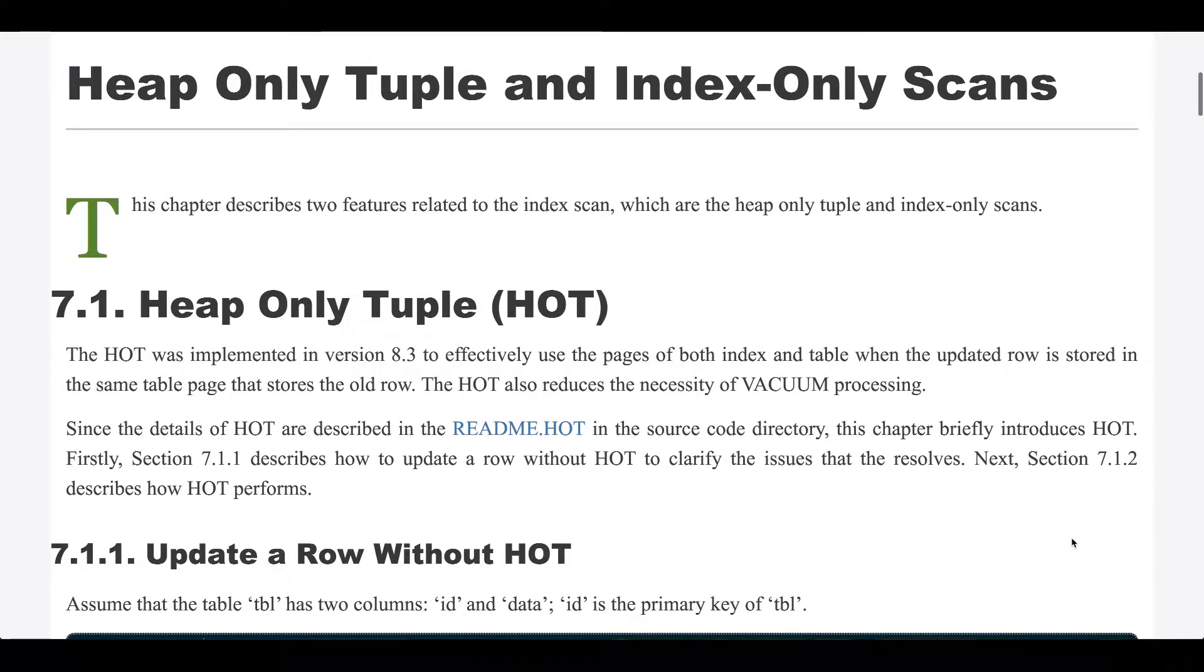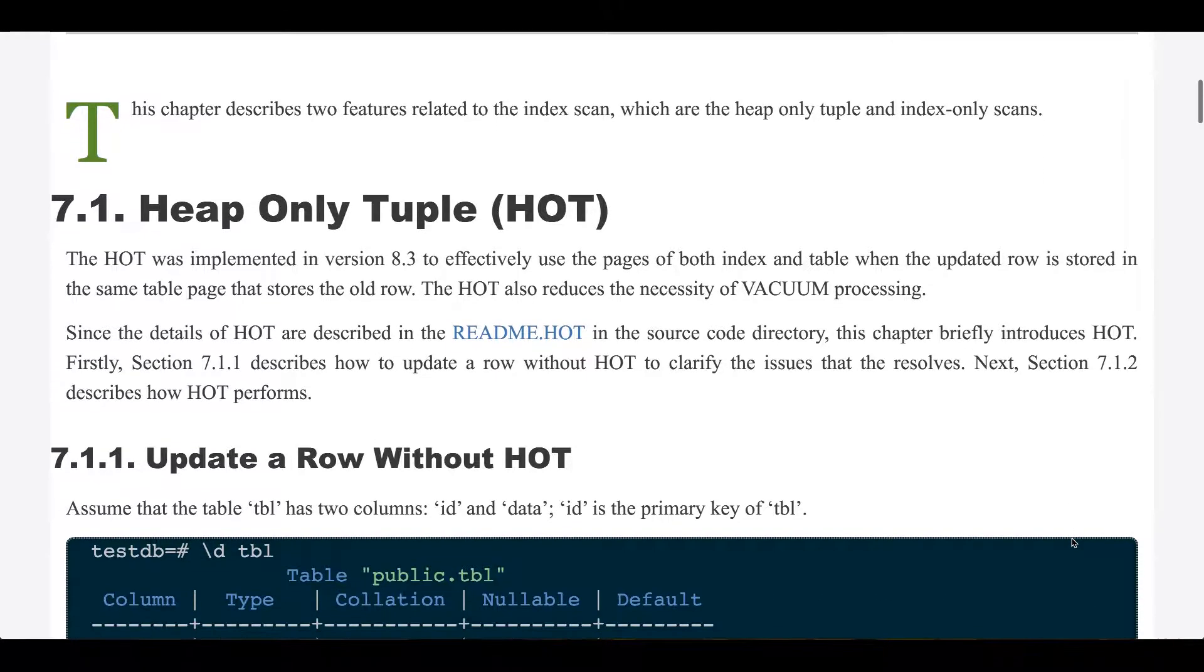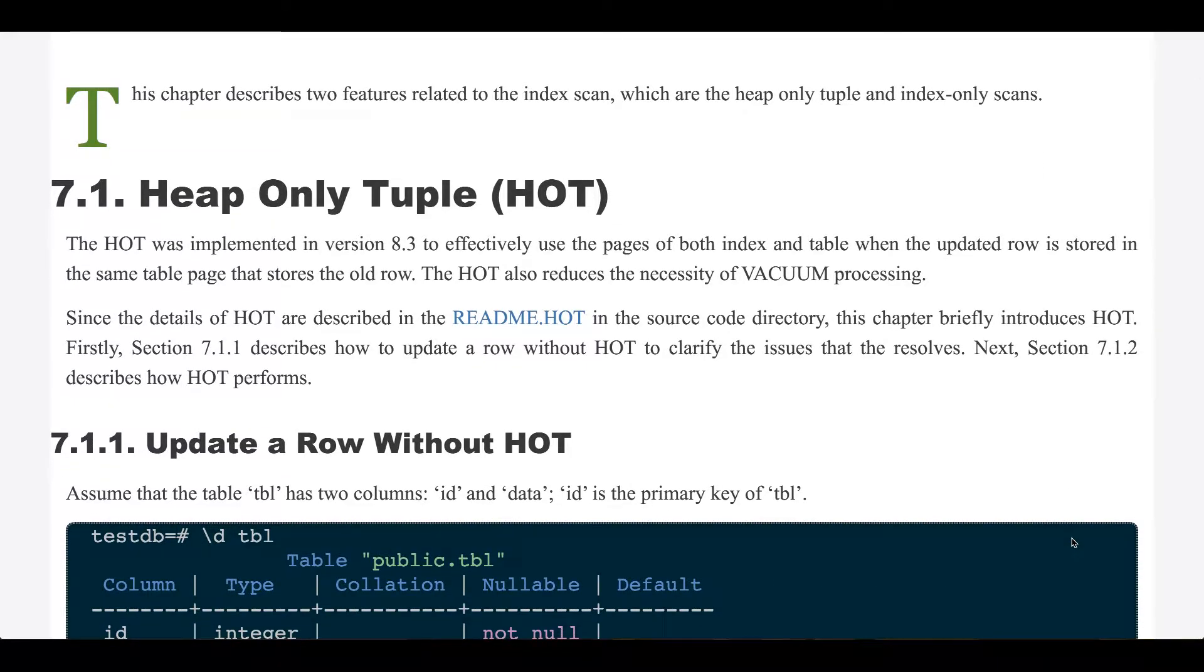This chapter describes two features related to the index scan, which are the heap-only tuple and index-only scans.